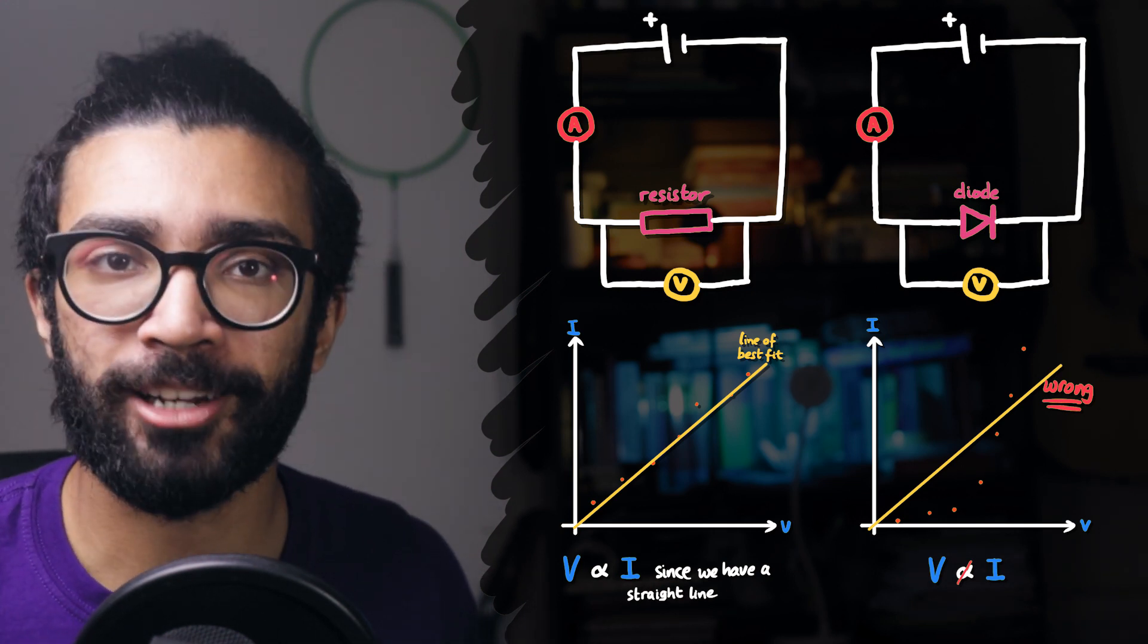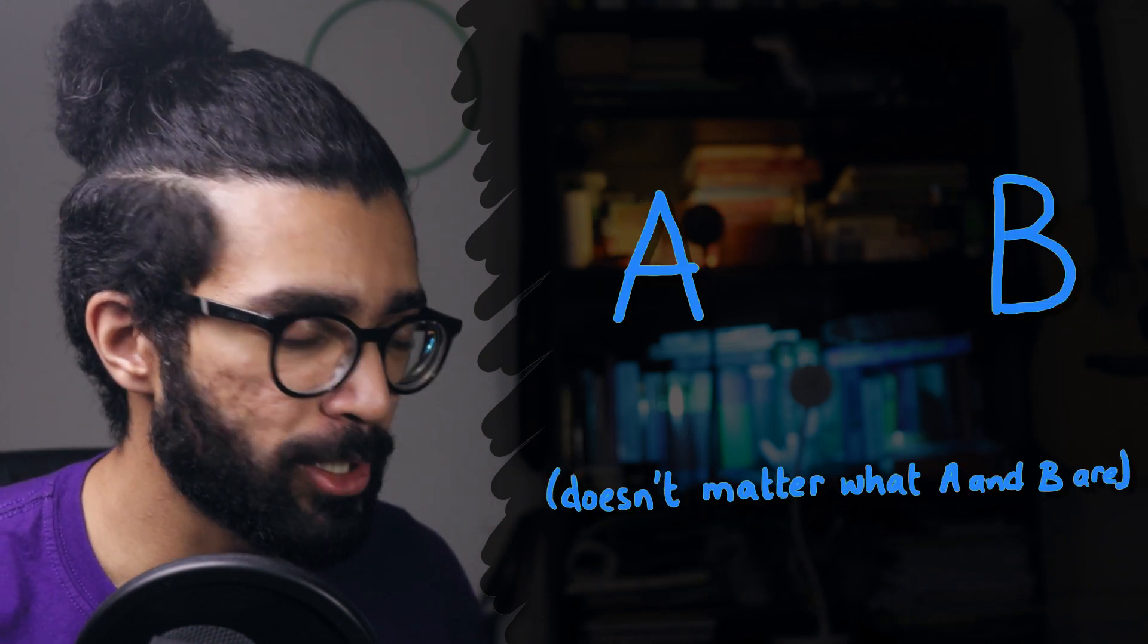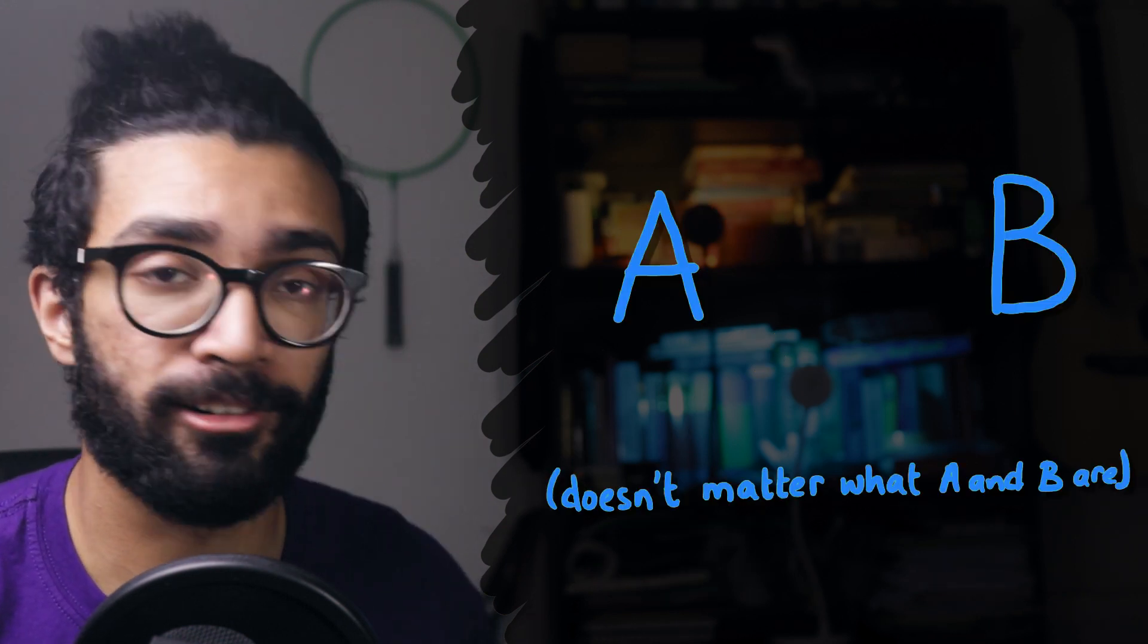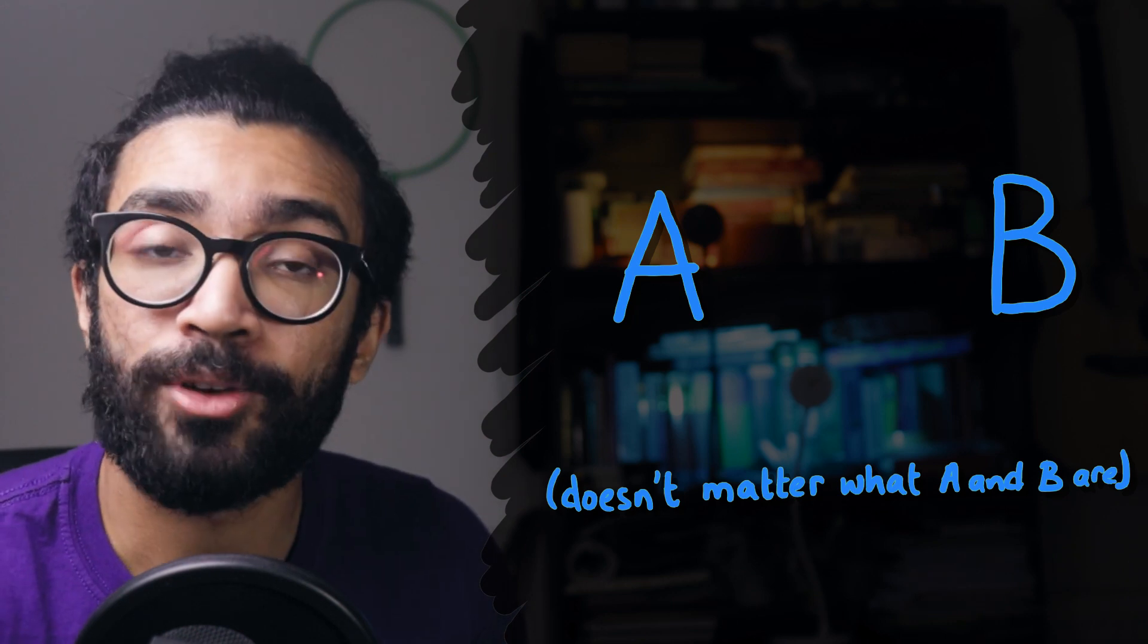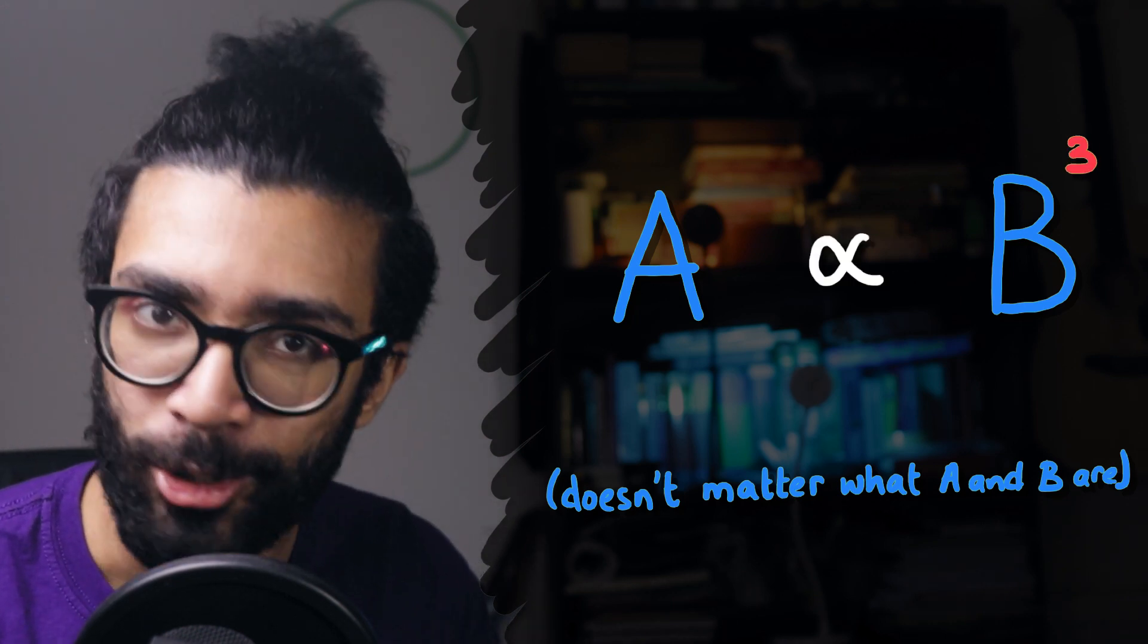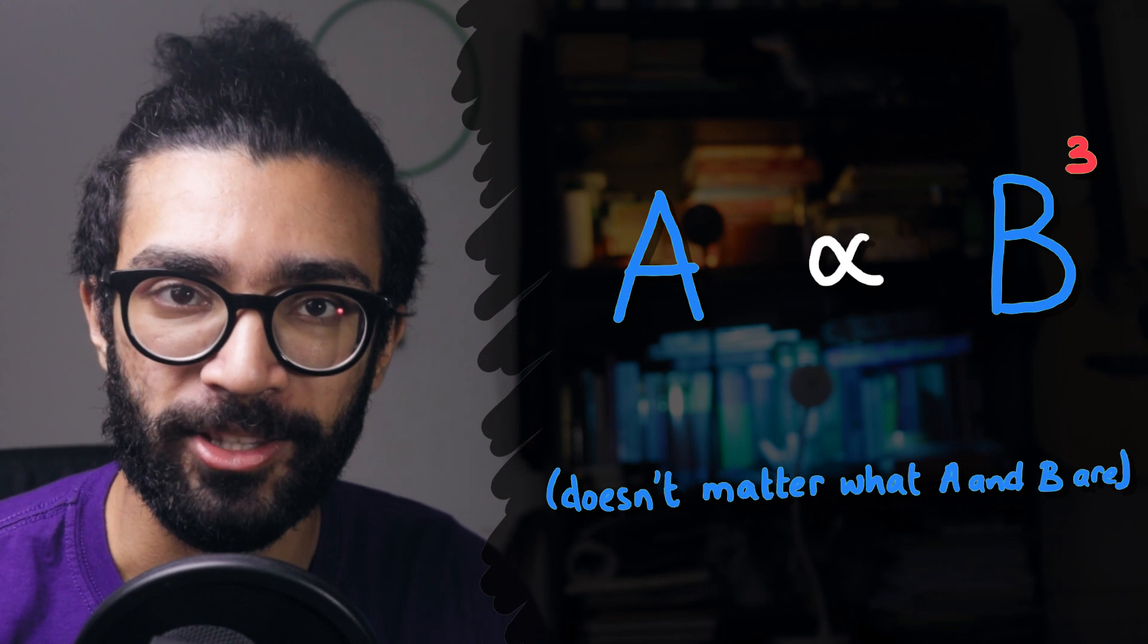But let's say we're now working with two generic quantities, A and B. And we're not necessarily trying to show that A is directly proportional to B. Maybe we're trying to show A is proportional to B squared, or maybe B cubed. In that situation, there's a few different things we can do.